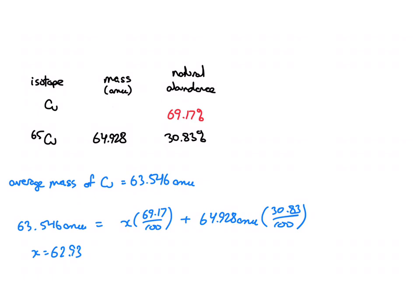So let's go back over here and this would be 62.93, and the isotope here would be copper 63.